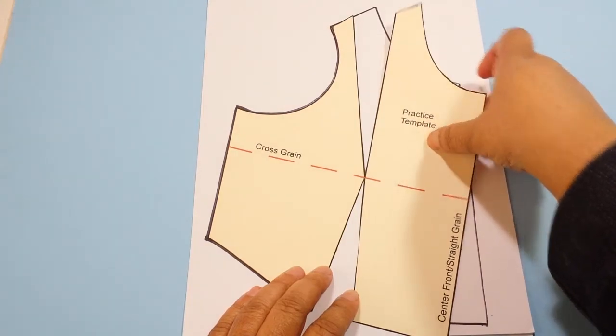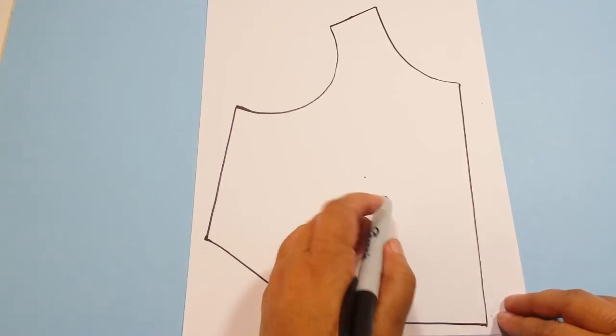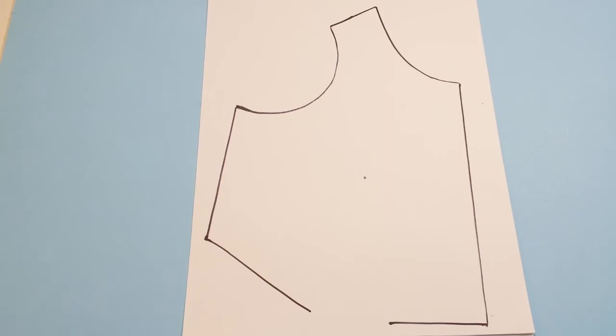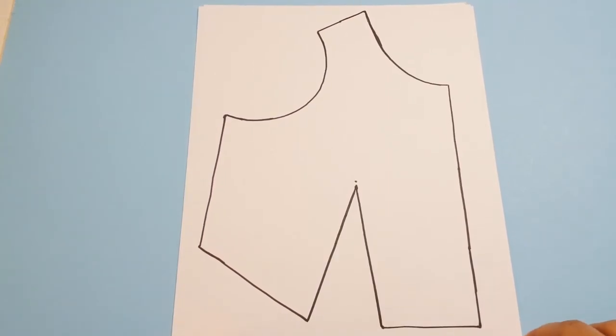Now we're going to remove our piece, mark our bust point, and draw in our new dart. And this is how you combine your shoulder dart with your waist dart using the pivot method.